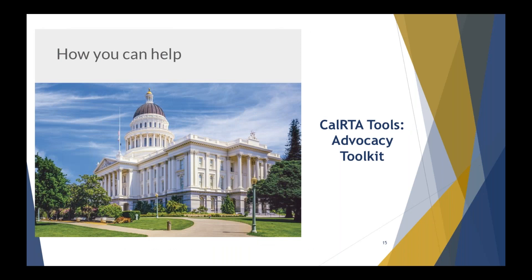The most recent section on the CalRTA website under advocacy action is our advocacy toolkit. Jennifer and I worked the last couple of weeks and decided it was really important to have all the materials and instructions needed to advocate virtually. We're all on a computer; we can all access this information simply. There's no reason you cannot request a meeting with your state assemblyman, state senators, congressperson, or our two senators, Feinstein and Harris. You can do it now through a virtual Zoom request.